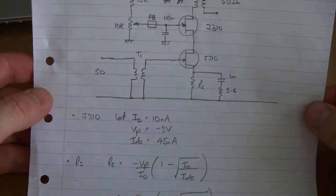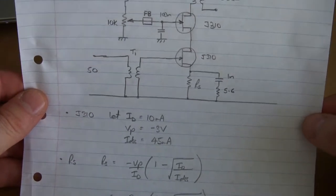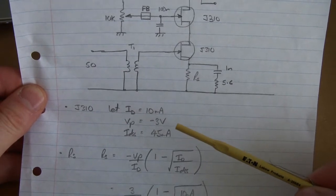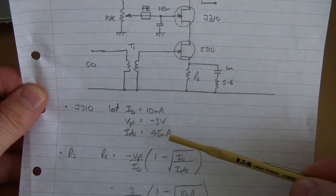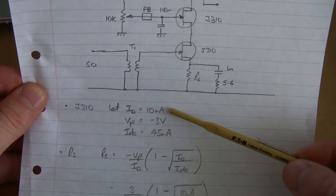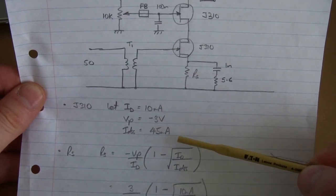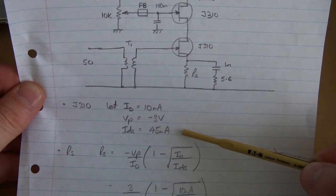So looking at the specs and coming up with some of the numbers, specifically this value of RS here. The J310, the spec sheet, we're going to set the drain current at 10 milliamps.